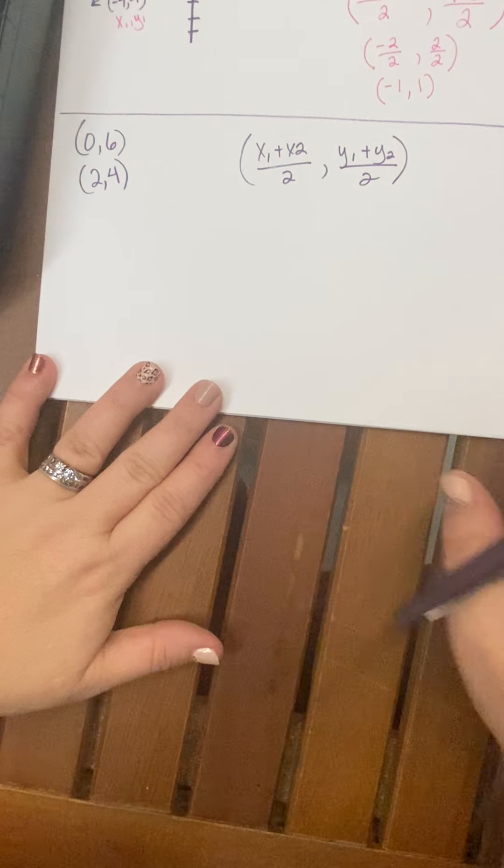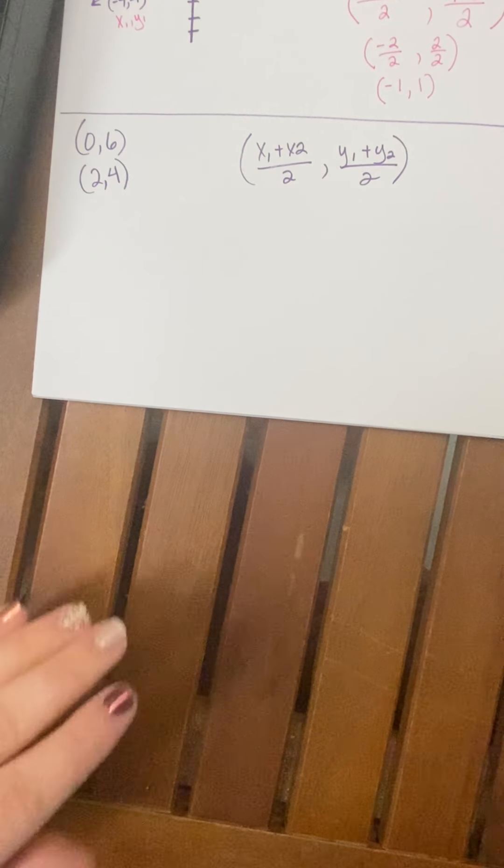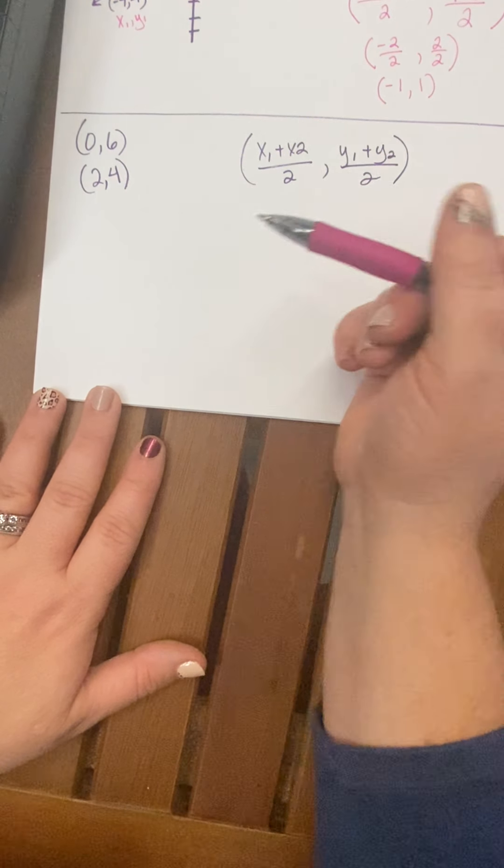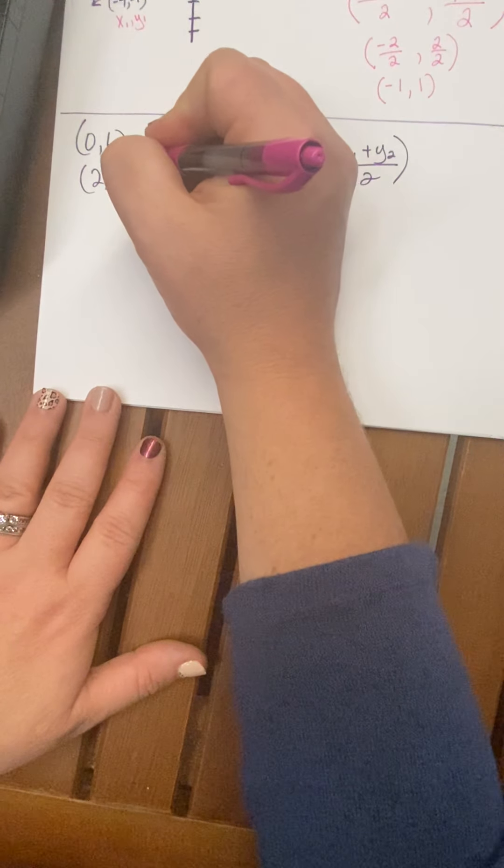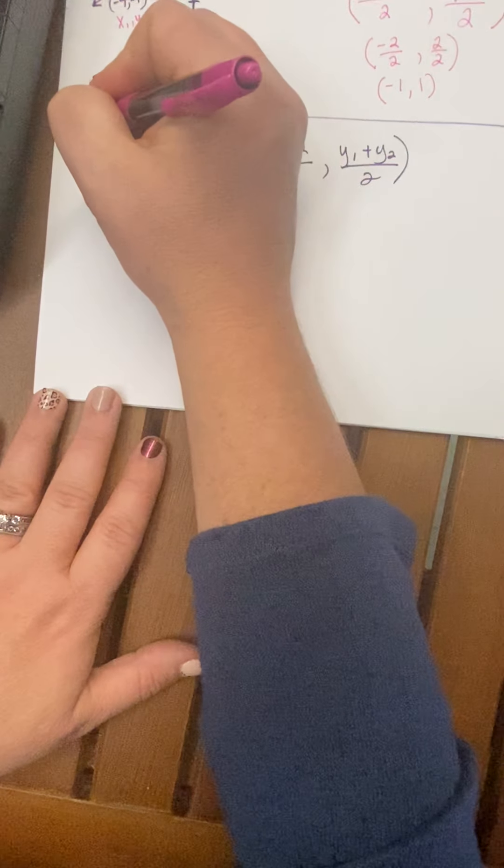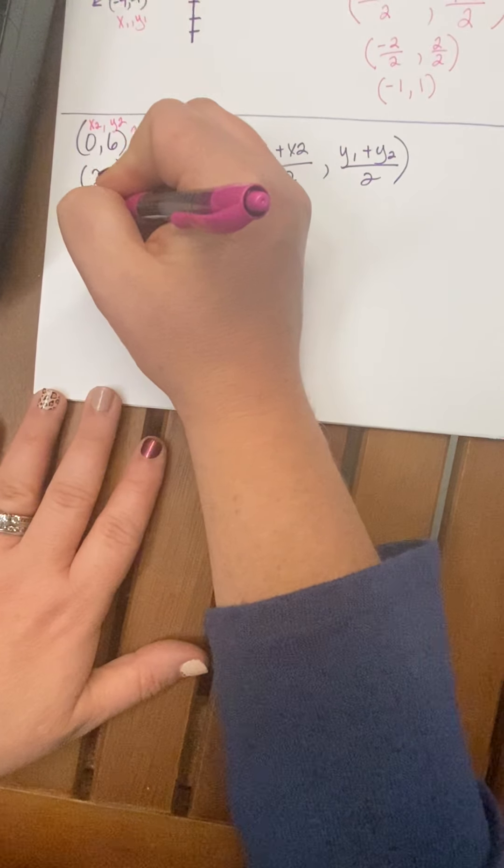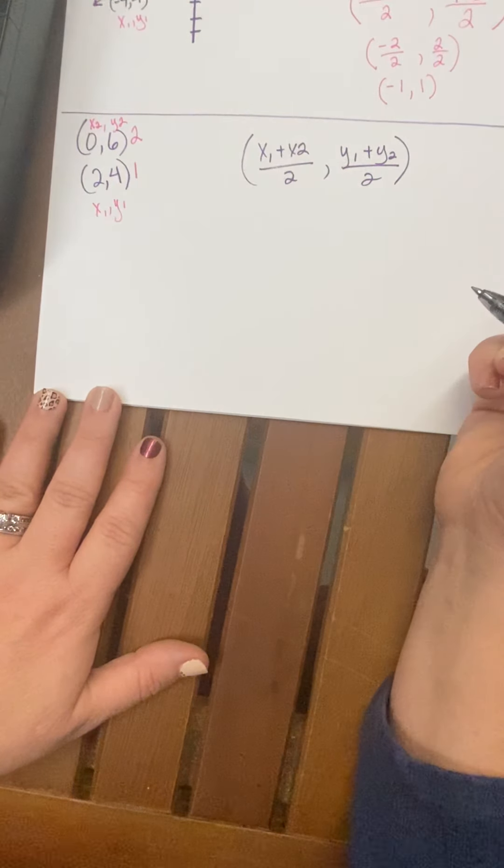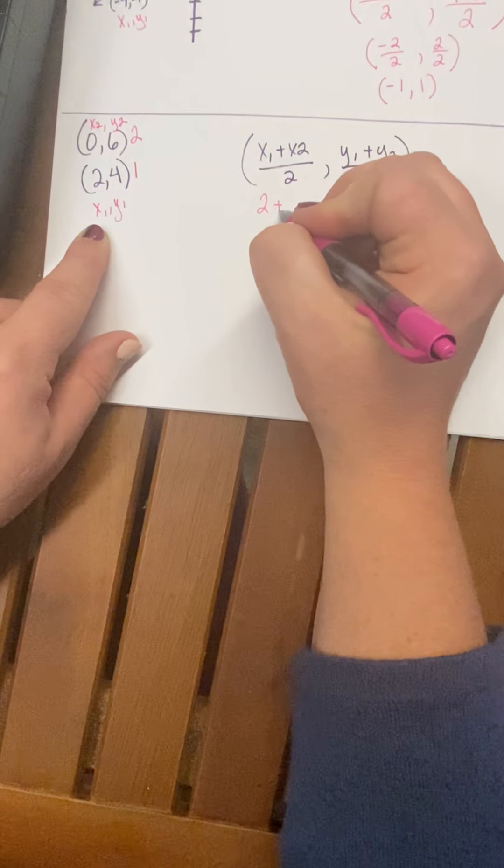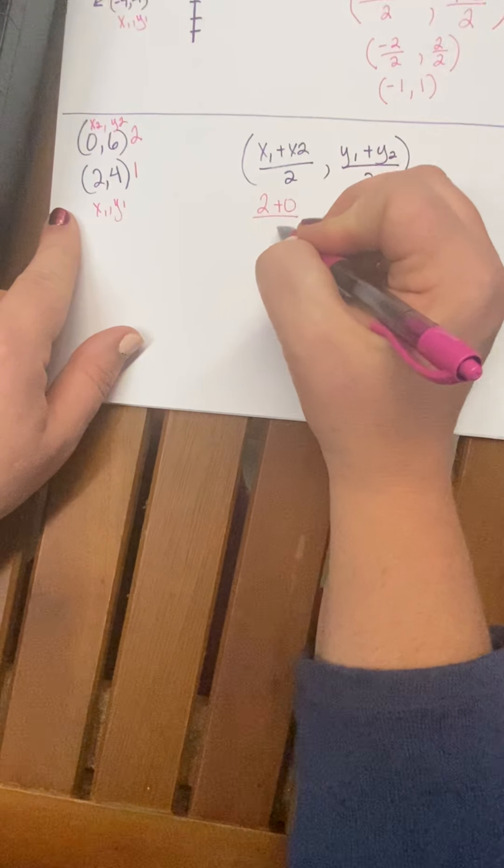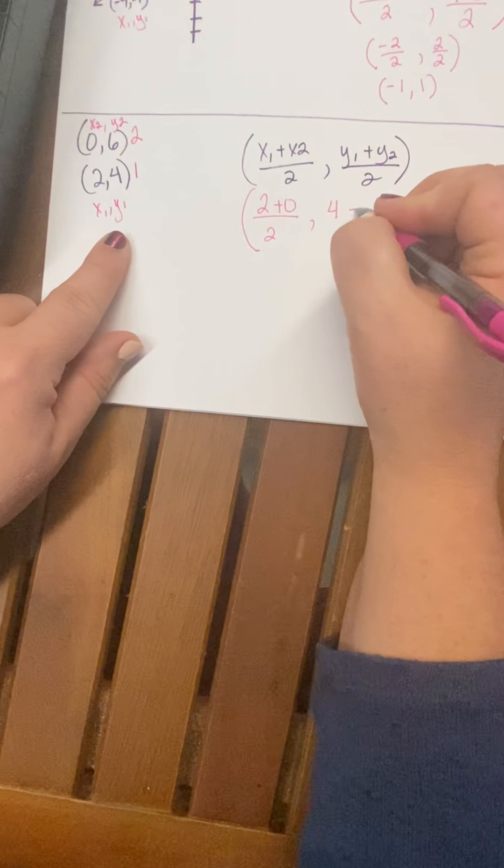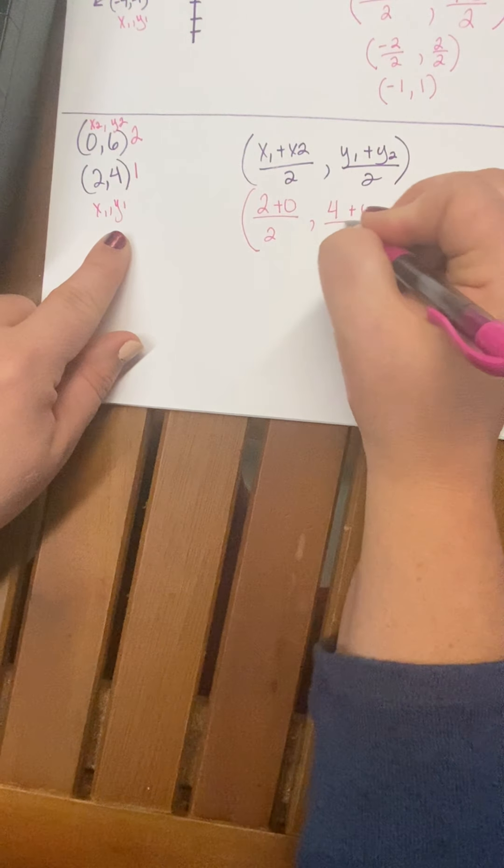Okay, so the first thing I need to ask myself is, which point is going to be my 1 and which point is going to be my 2? Just for the sake of fun, I'm going to call this one 1, and I'm going to call this one 2 to show you that it really doesn't matter. Okay, so this is x2, y2, x1, y1. So let's plug into my formula. x1 is 2, x2 is 0, over 2. y1 is 4, y2 is 6, over 2.